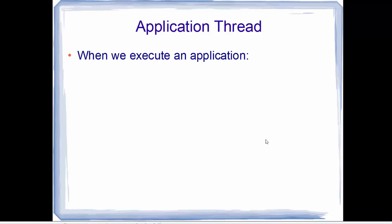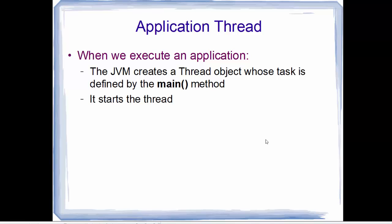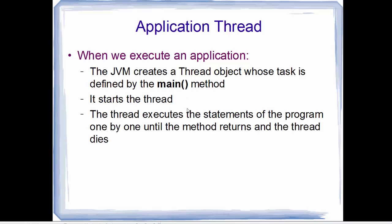What is an application thread? Whenever a Java program is executed, it runs on the JVM — the Java Virtual Machine. The JVM creates a thread object whose task is to execute the main method, then starts that thread. Every Java program has at least one main method, and whenever you execute the program, the JVM creates a thread to run that main method. The thread executes the statements of the program one by one until the method returns or the thread dies.